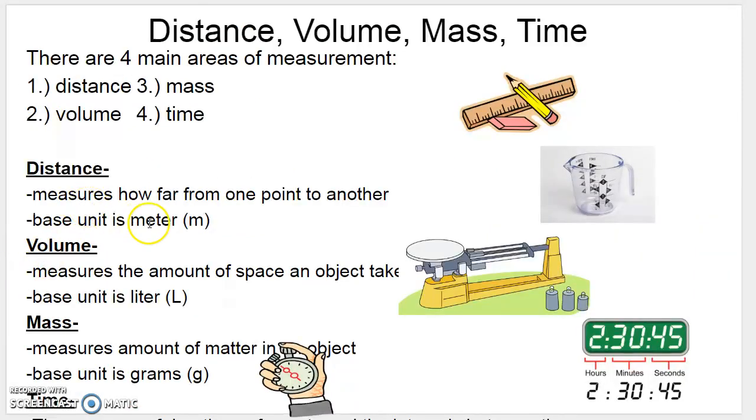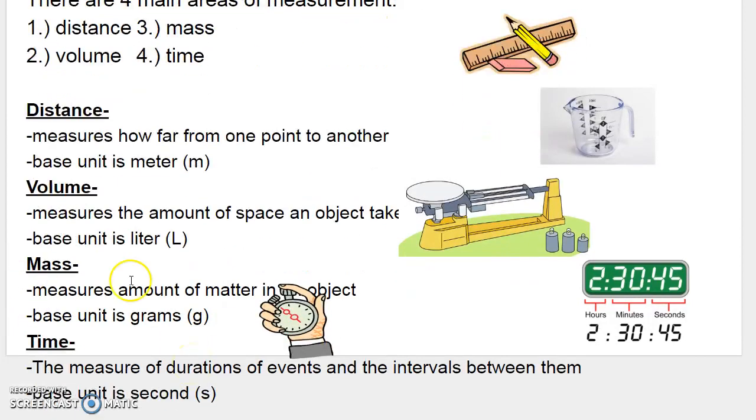You can have a kilometer, you can have a centimeter, a millimeter. You can have a kiloliter, a centiliter, a milliliter. Same thing with grams and seconds. So any one of my six prefixes can go in front of any one of my base units, and that's just going to change the size of the unit that you're talking about.